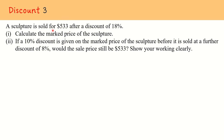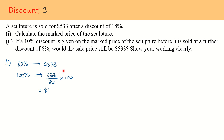Our marked price is our base value or the original value, which is 100%. So we are trying to find out what is 100%. In our calculations, we have 82% representing $533, and therefore 100% will be 533 over 82 times 100, which gives us $650. Therefore, the marked price is $650.